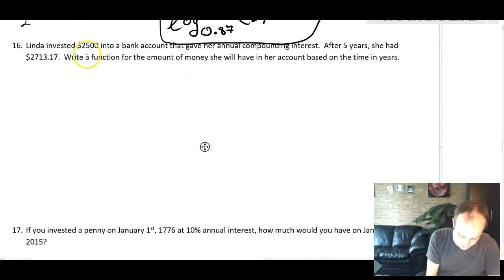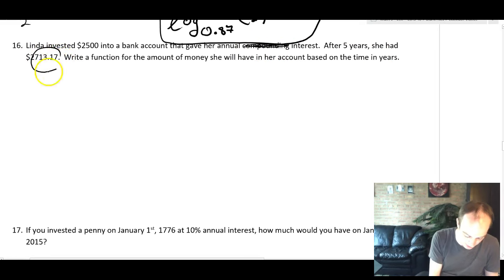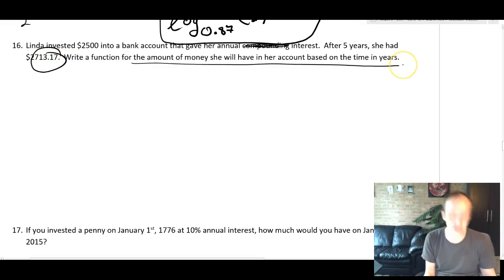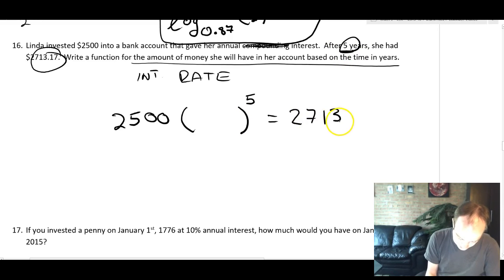Number 16, Linda invested 2,500 in a bank account that gave her annual compounding interest. Let's ignore the word compounding there. Just say annual interest. After five years, she had this amount. And we want to write a function for the amount of money she will have had in her account. So the one thing they didn't tell us is the rate of interest. So we're going to set up our equation kind of with just a missing blank here. So it's going to be 2,500 times something to the fifth because it's five years equals 2713.17.